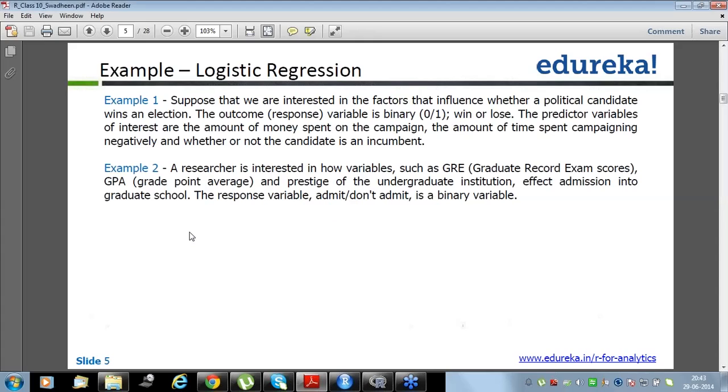Example of logistic regression. There are two examples. Suppose that we are interested in the factors that influence whether a political candidate wins an election. The outcome variable is binary, win or loss. We simply want to predict the probability of winning or losing. The predictive variables of interest are the amount of money spent on the campaign, the amount of time spent campaigning negatively, and whether or not the candidate is an incumbent.